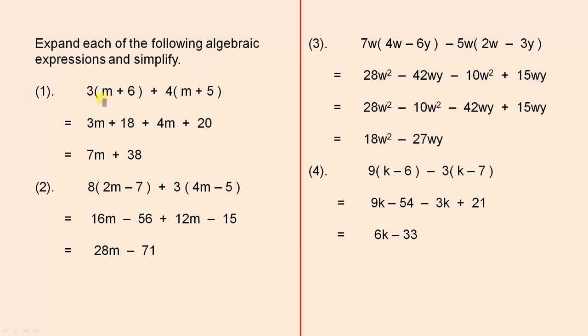Now we have those two algebraic expressions. So that gives us 3m plus 18 plus 4m plus 20. Add the like terms to give us 7m. 18 plus 20 is 38.